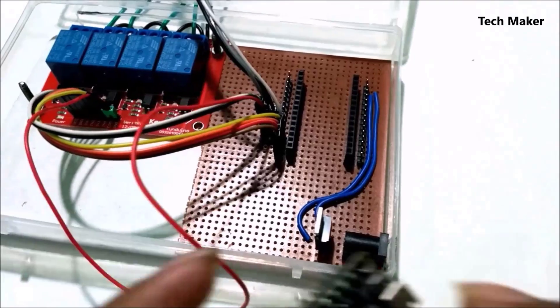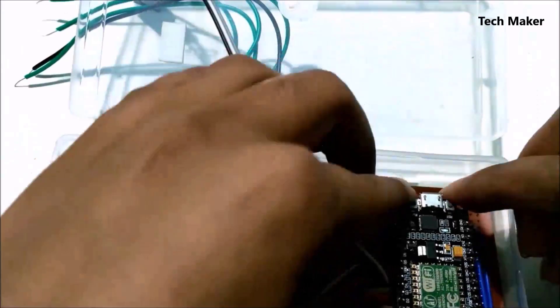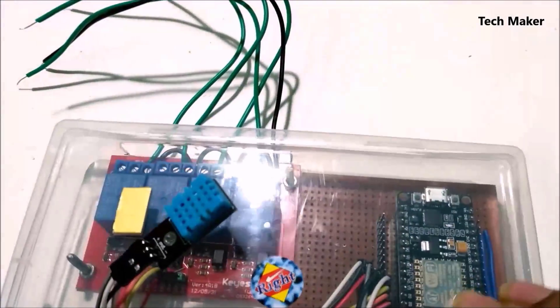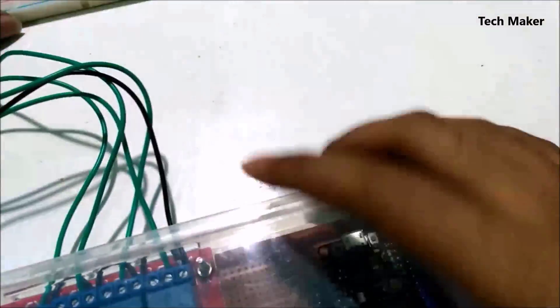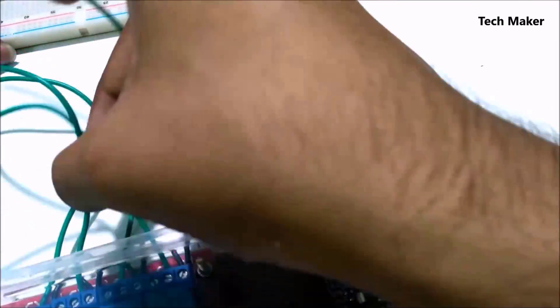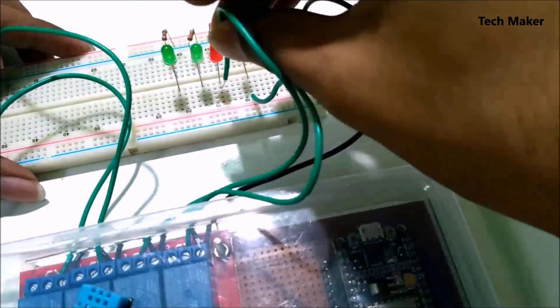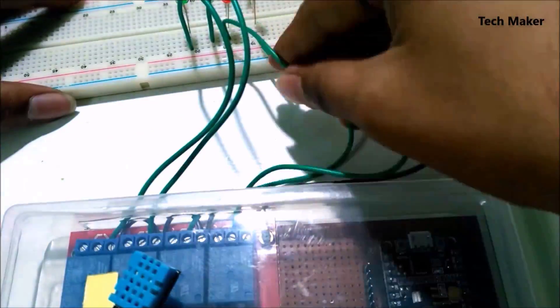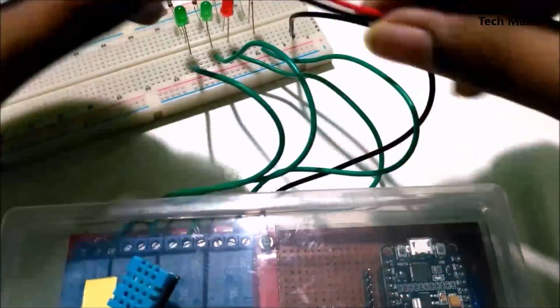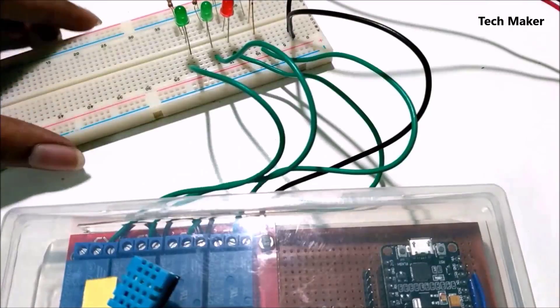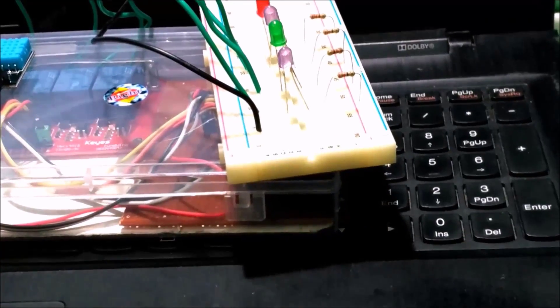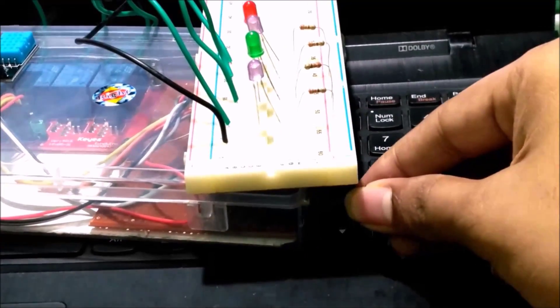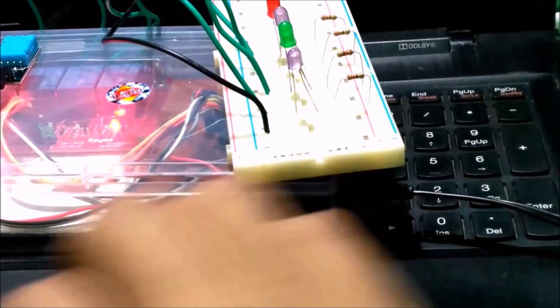Now program the NodeMCU. After programming, insert it again. Now I am taking LEDs as control outputs instead of the appliances. When I click on the buttons on the dashboard, these respective LEDs will glow. Instead of this, we can also connect the main power supply to control the actual outputs. Now testing it; connect the power supply.